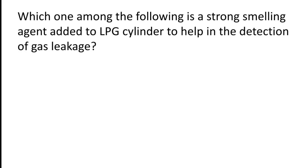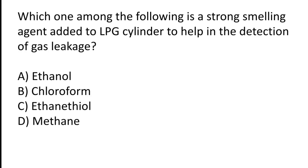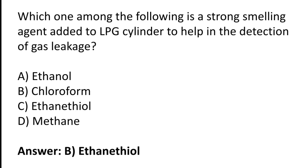Which one among the following is a strong smelling agent added to an LPG cylinder to help in the detection of gas leakage? Options: ethanol, chloroform, ethyl mercaptan, or methane? The correct answer is option B — ethyl mercaptan is the strong smelling agent added to LPG cylinders to help detect gas leakage.